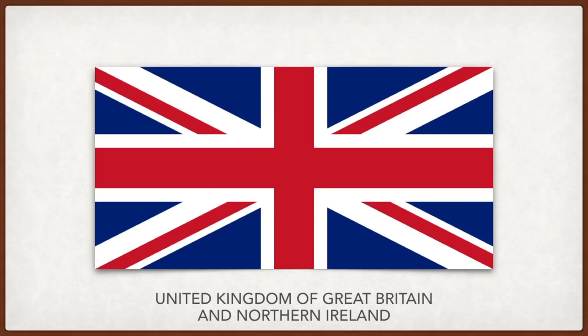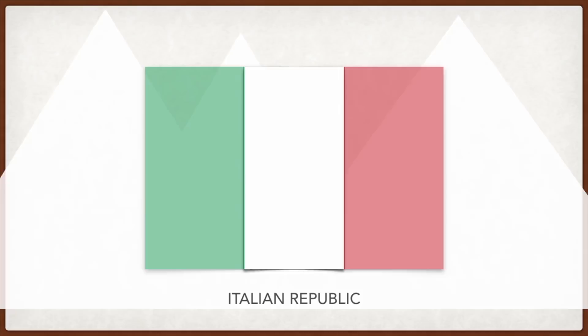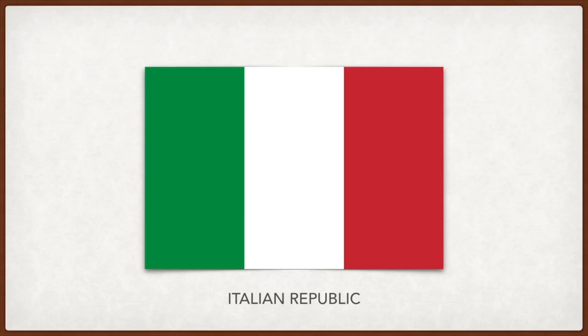The United Kingdom: the flag is an amalgamation of three flags — the Kingdom of England, the Kingdom of Scotland, and the Kingdom of Ireland. Italy: green represents the country's land, white the snow-capped Alps, and red the blood spilt in the wars of independence; a more religious interpretation sees green, white, and red as hope, faith, and charity respectively.